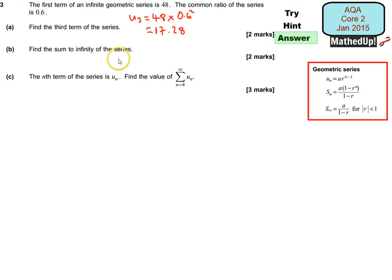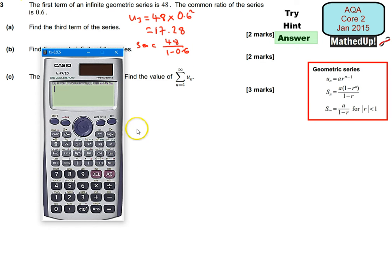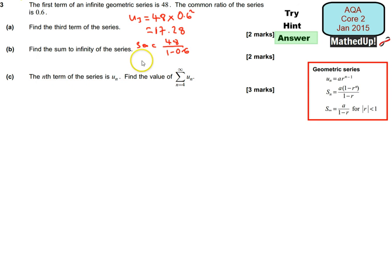The sum to infinity of the series. Well, I can use this formula here, A over 1 take away R. So my sum to infinity is going to be equal to A which is 48 divided by 1 take away R. So that's going to be 1 take away 0.6. So using my calculator again, I can do 48 divided by 1 take away 0.6 which is 0.4. And that gives me 120. So my sum to infinity is equal to 120.